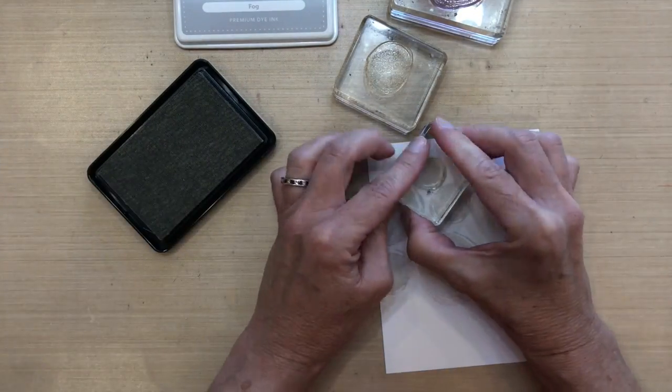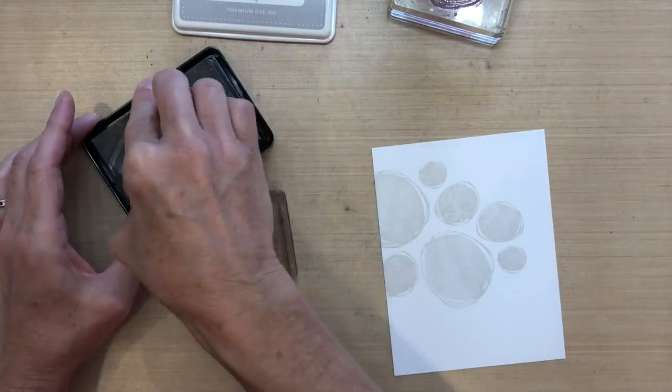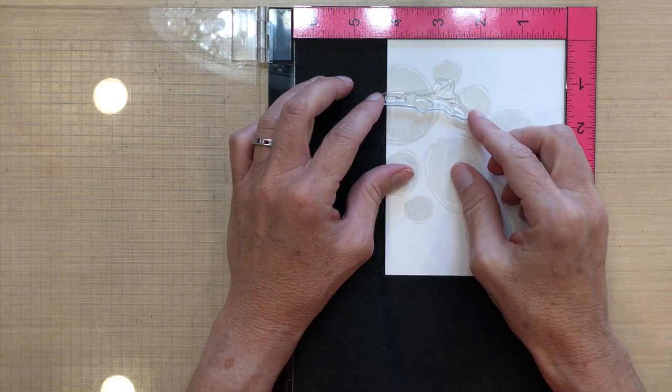The reason why I'm using this ink is because if I stamp over it, you really won't be able to see it. So it's not going to affect the flowers that go over this background. I kind of started big in the middle and worked my way out to the smaller dots.